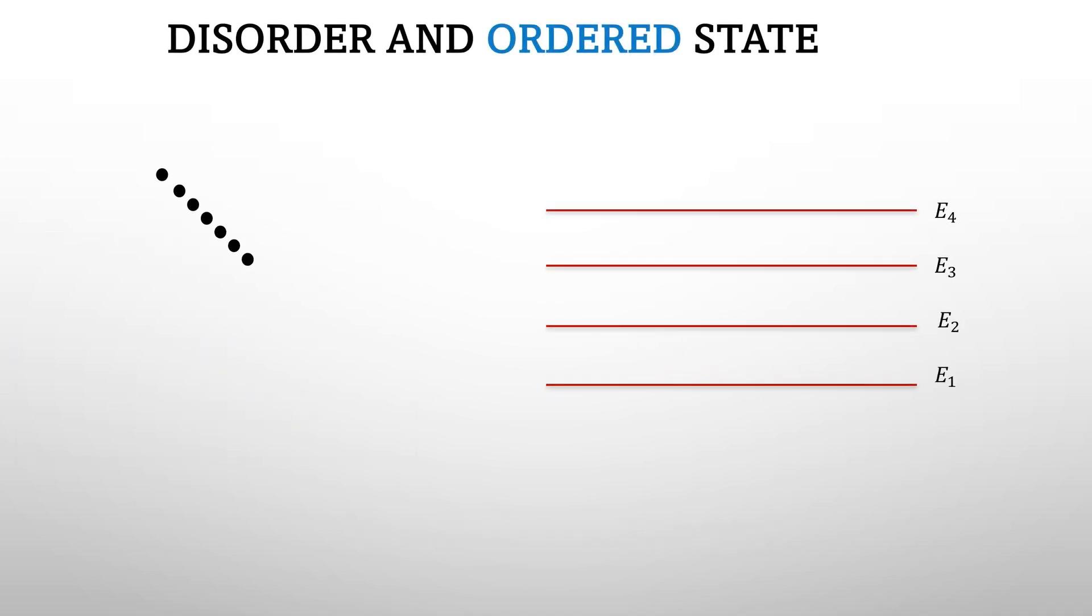Now there can be other configurations of distribution of particles as well. So entropy is related to possible number of configurations for specific particular energy. The larger the possible number of configurations, greater the entropy.